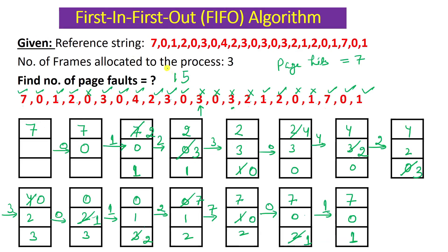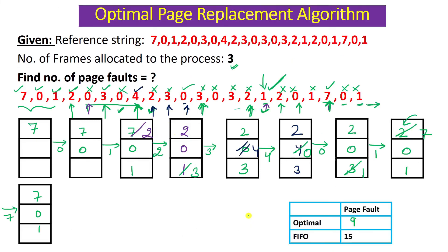Just for your understanding, this was the example we discussed using the FIFO algorithm where we got 15 page faults. So I think you have understood how the optimal page replacement algorithm is applied and how it works. This is the best algorithm out of the others, giving the minimum number of page faults in comparison to all the other algorithms.